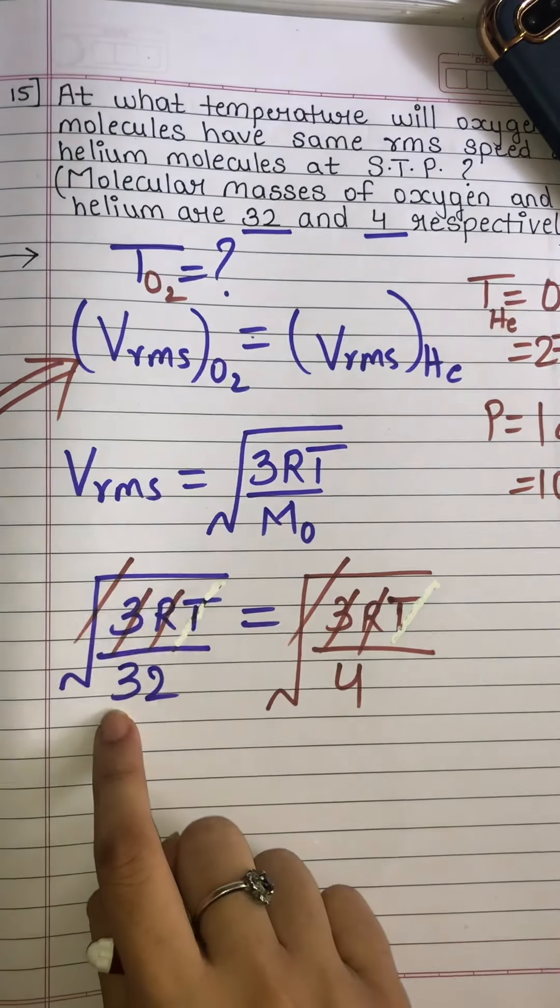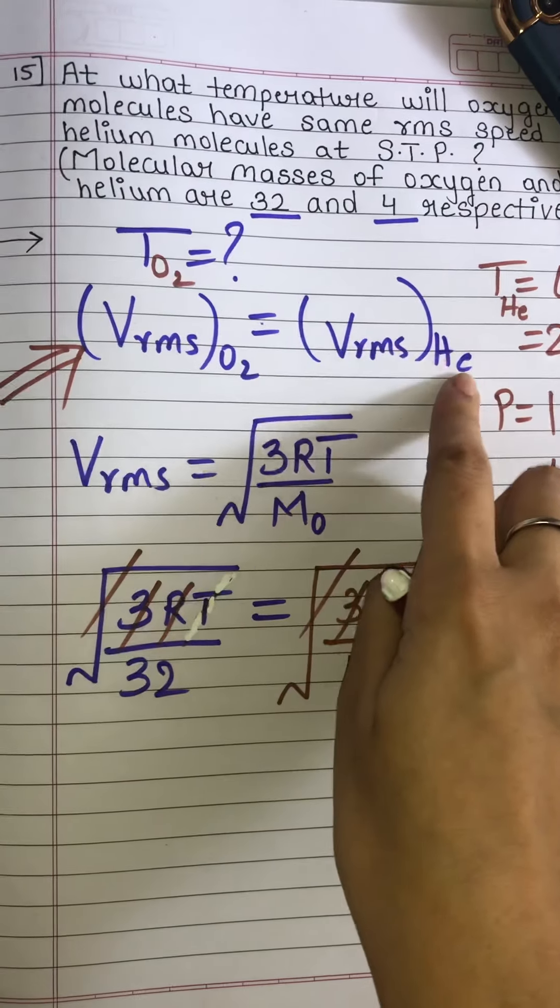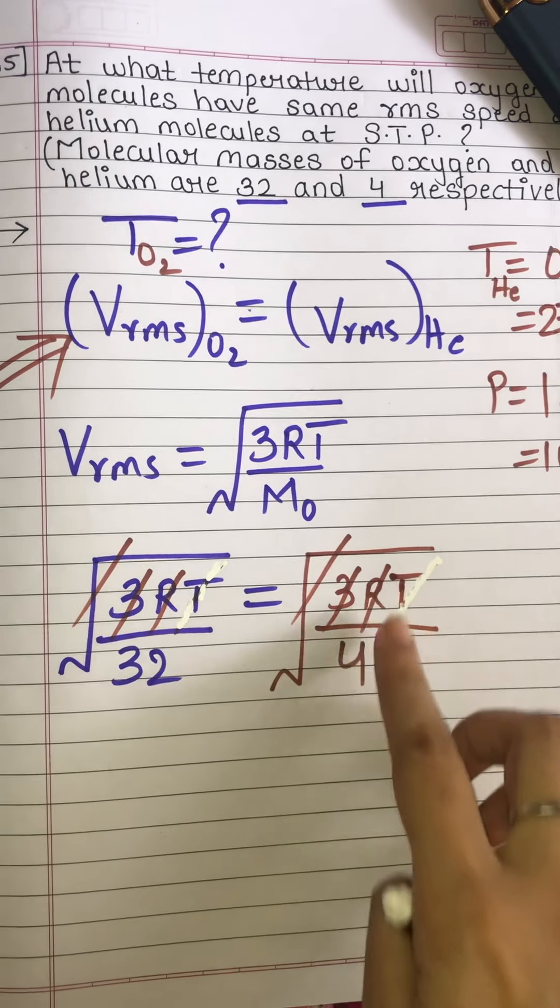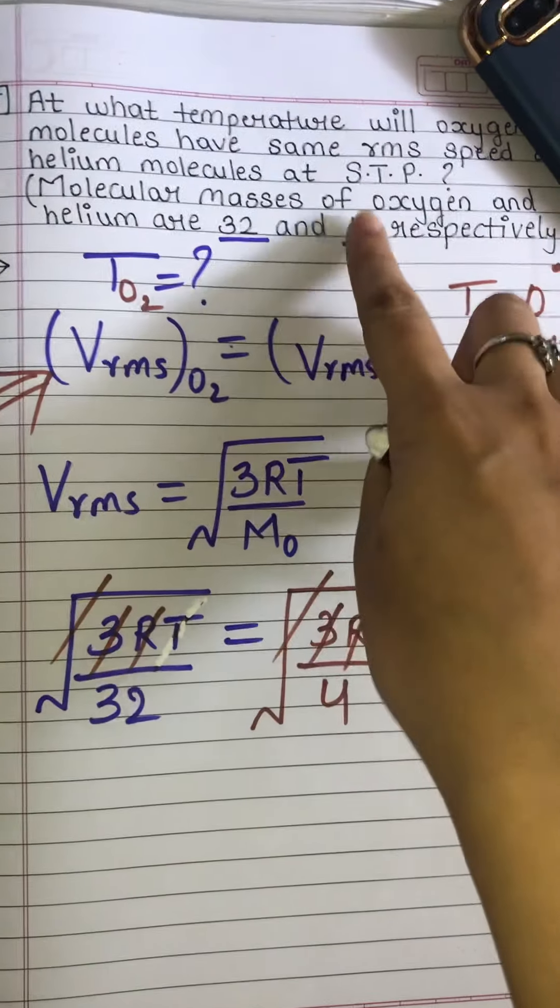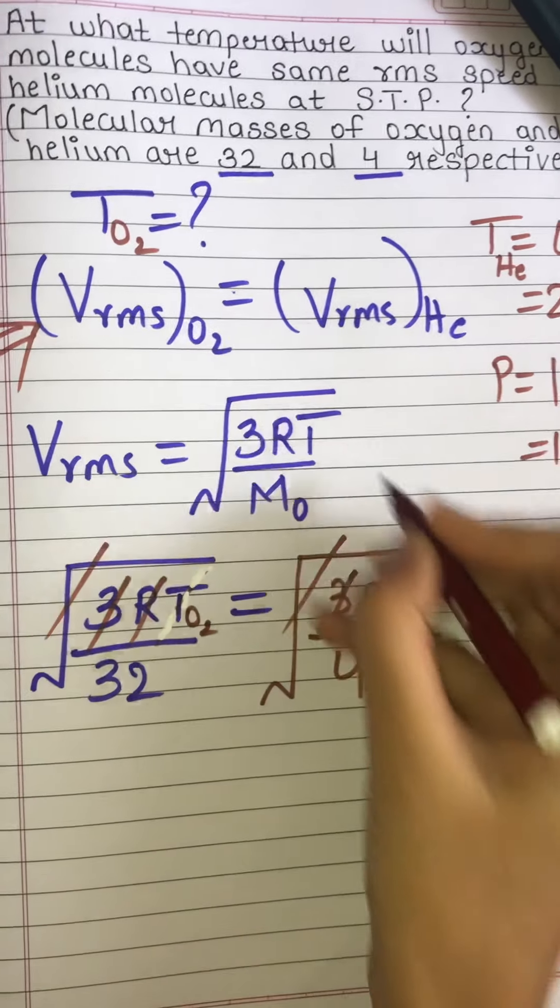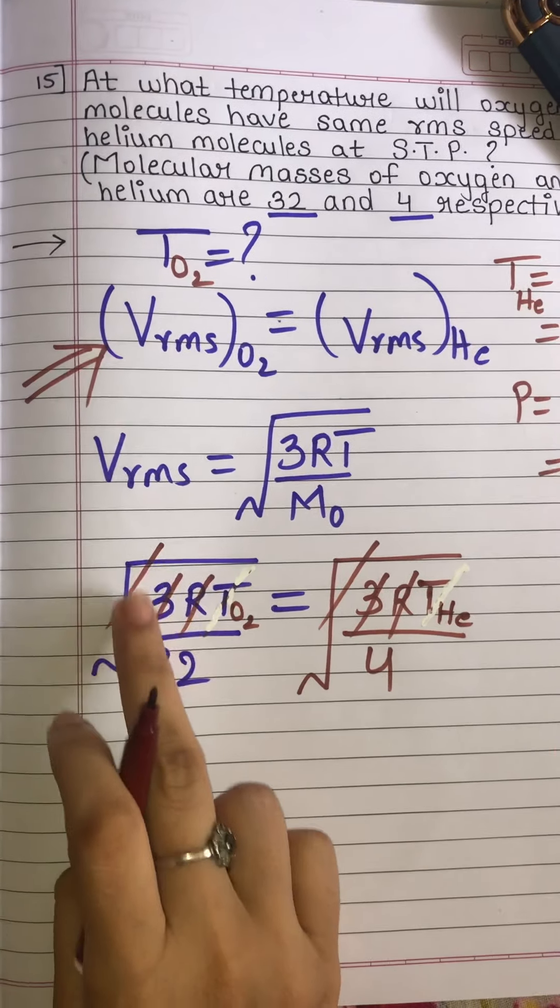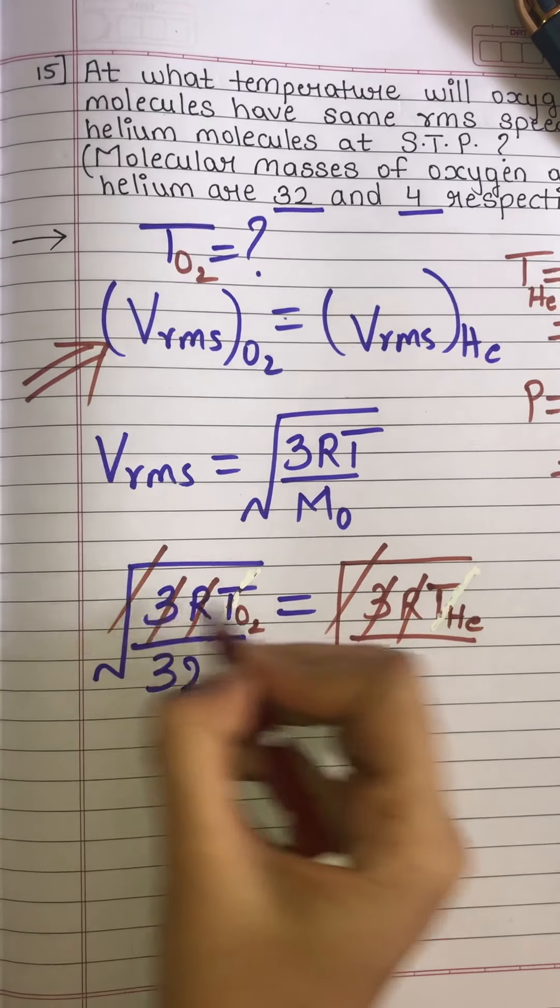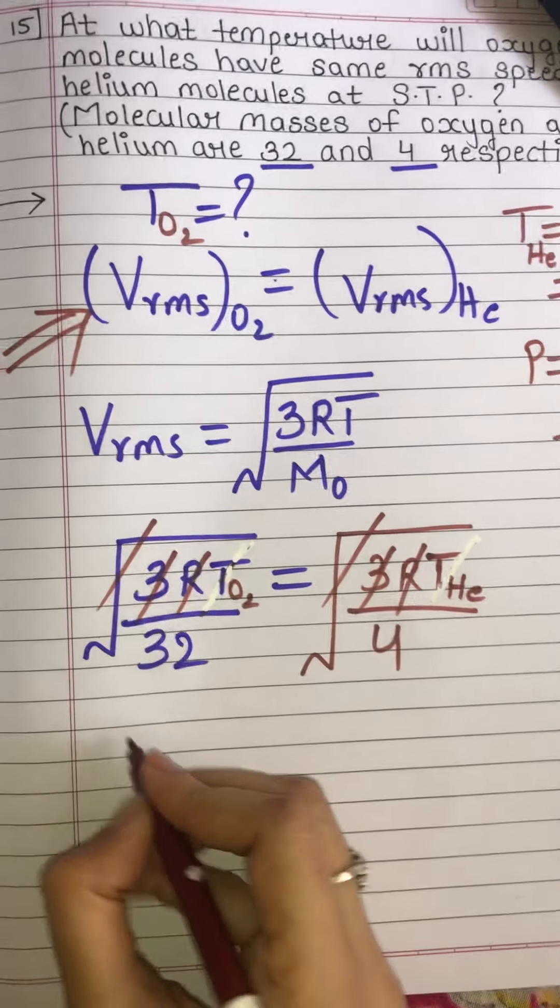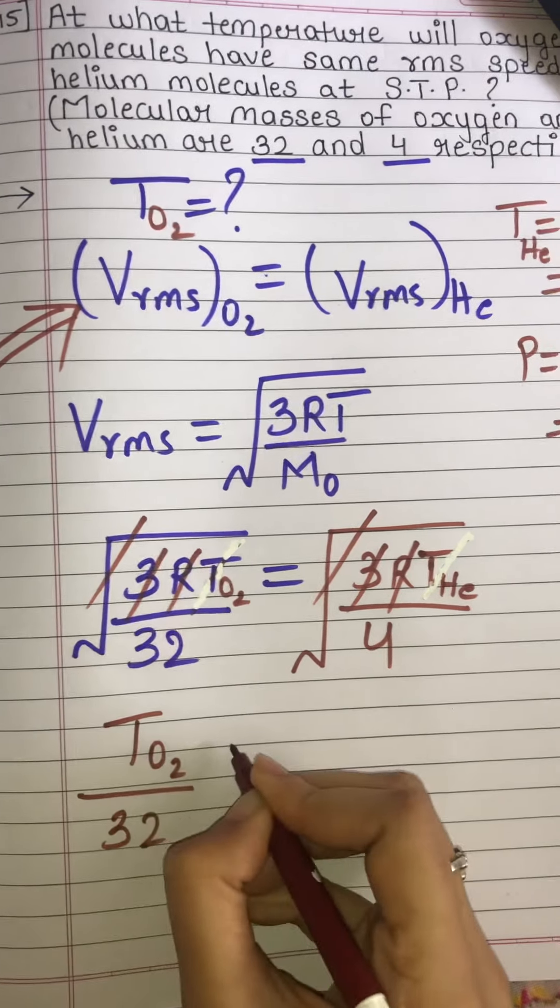For helium it is 4. For oxygen I have substituted 32, which equals V_RMS for helium: the square root of 3RT upon M0 for helium, that is 4. The temperature for oxygen can now be calculated.